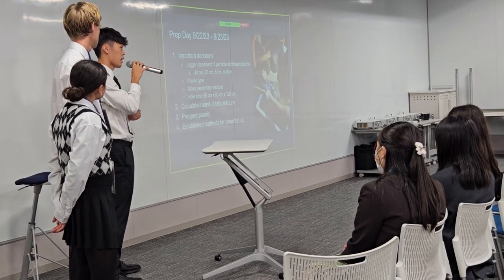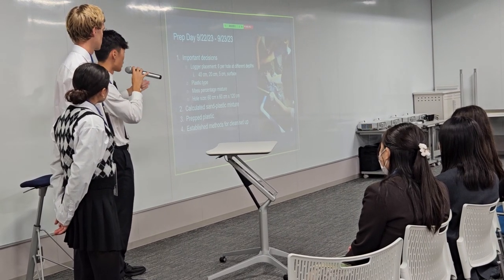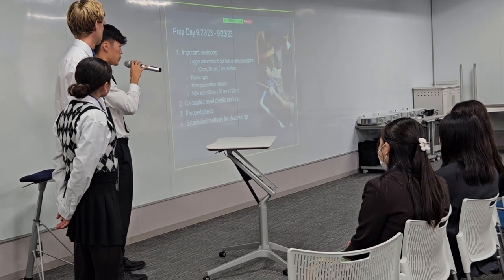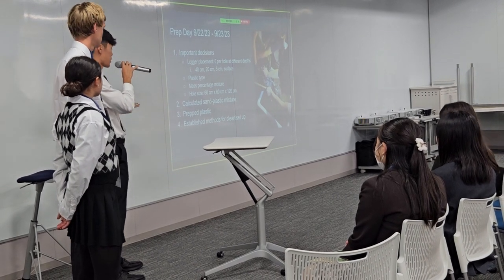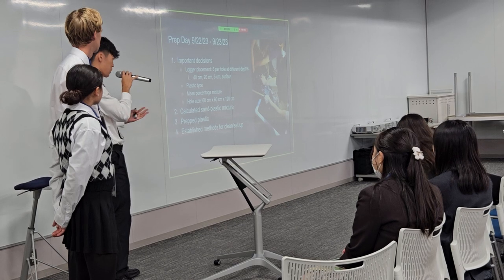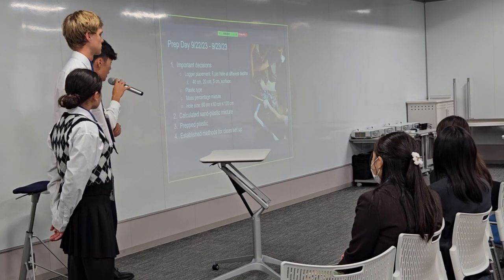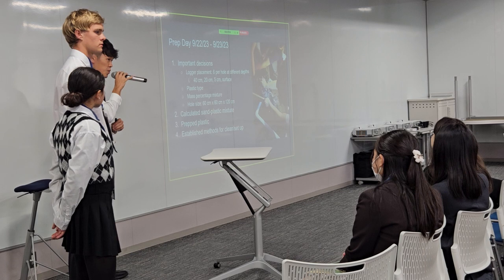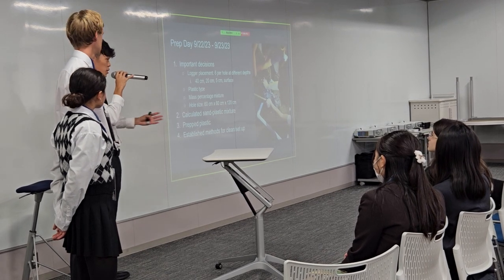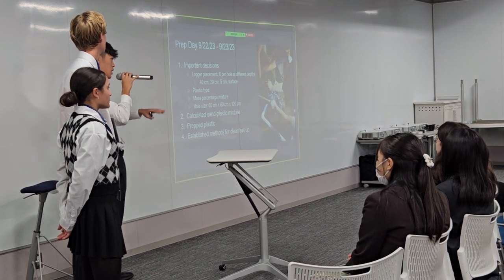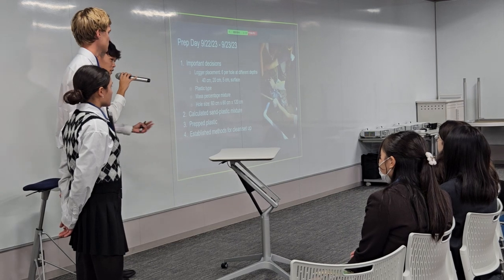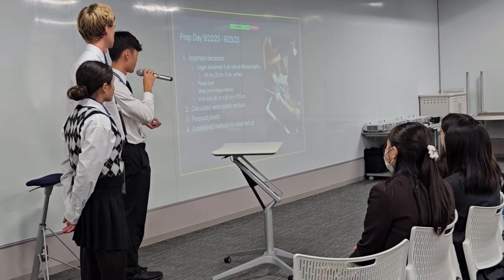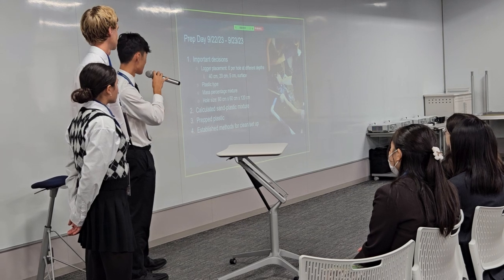We calculated how much plastic we would need for that volume of sand, portioned it all out in a bucket, and prepped the plastic. We also established a method for cleaning up and setting up our experiment. For setup, we wanted to make sure everything was controlled and the experiment went well. When we cleaned up, we wanted to make sure we didn't leave any plastic on the beach — we didn't want to pollute the environment any further.